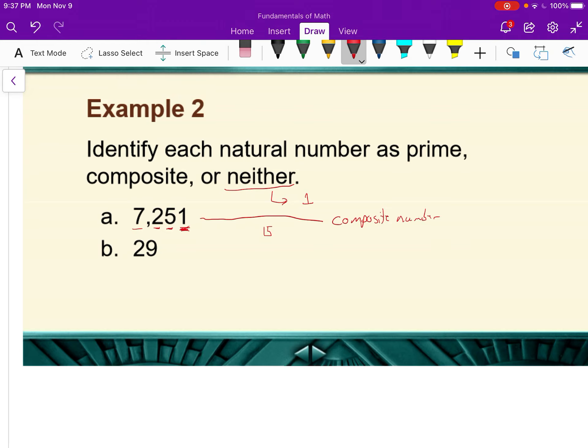And then 29. 29, the square root of 29, well we don't know that, but the closest one is the square root of 25. So all we have to do is check up to 5 to see if any factors go into 29. So 2 doesn't because it's not even. 3? 2 plus 9 is 11. 3 does not go into 11, so 3 doesn't work.